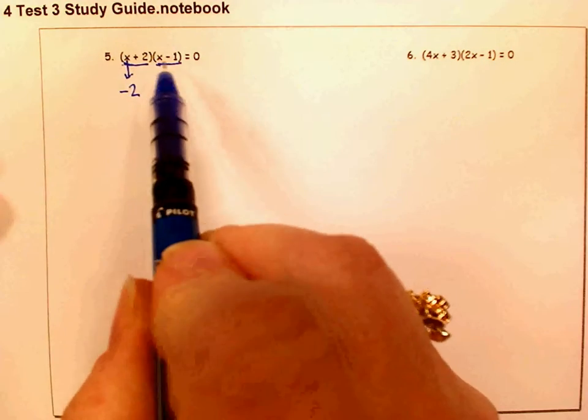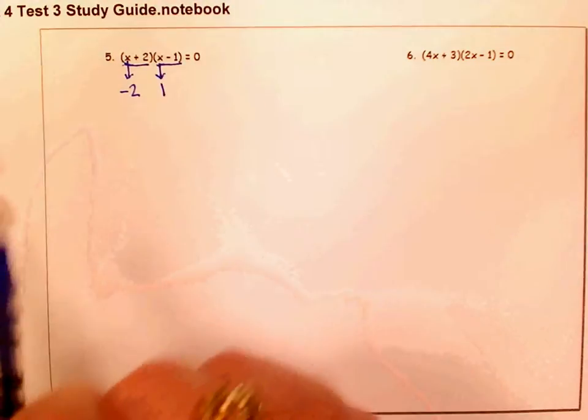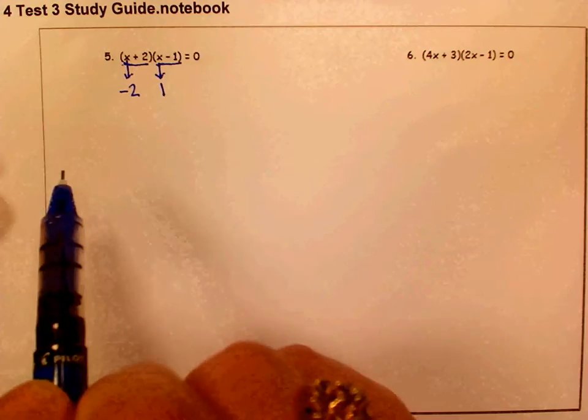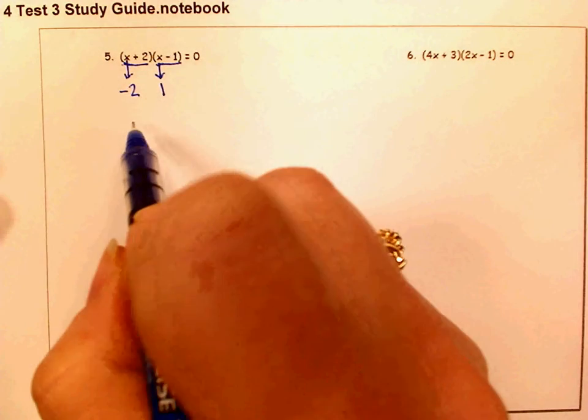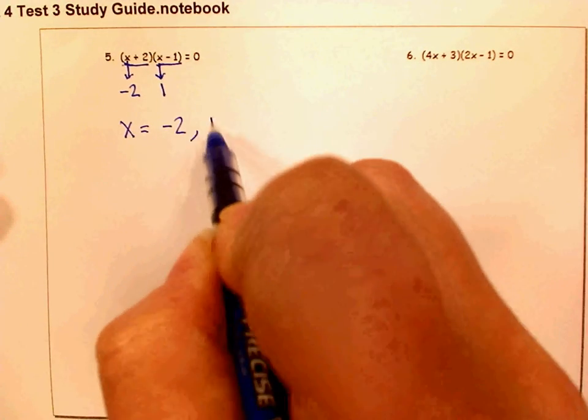For this value of x, since this is a negative 1, x would have to have the opposite sign and be a positive 1. 1 minus 1 is zero. So these are our two solutions for x: x is either negative 2 or positive 1.